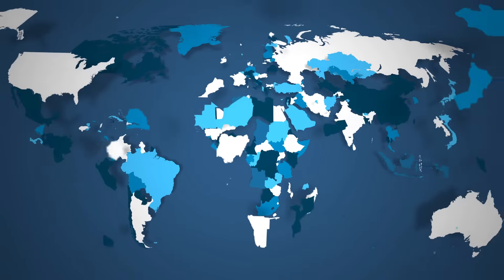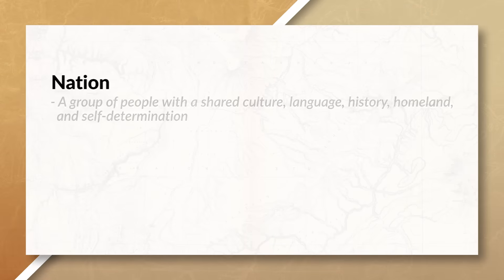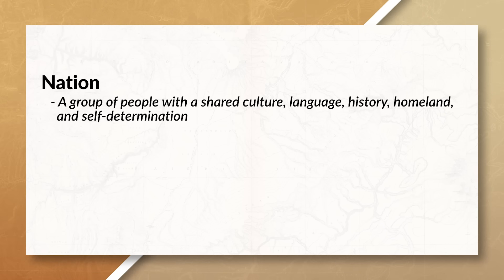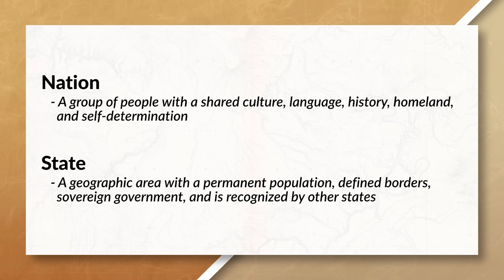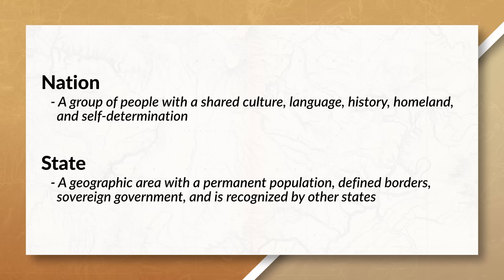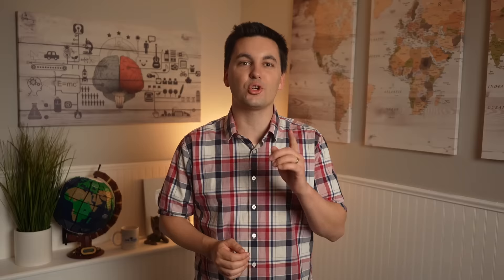When looking at different states around the world, we can also observe different nations. A nation is a group of people with a shared culture, history, homeland, and a desire to govern themselves. Notice this is different from a state, which consists of a permanent population, defined borders, a sovereign government, and is recognized by other states. When trying to remember the difference, just remember a state is referencing the government and land, while a nation is referencing a group of people with a shared culture and history.